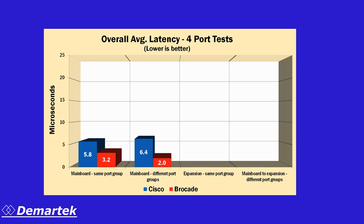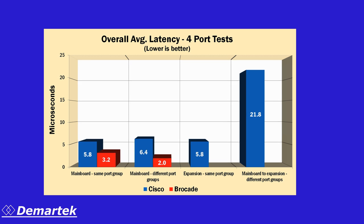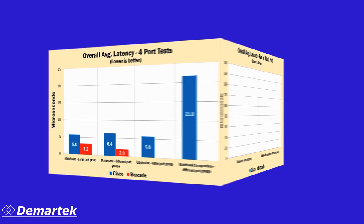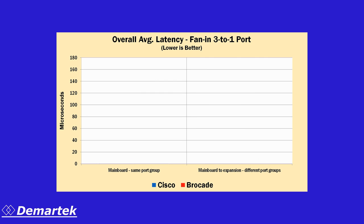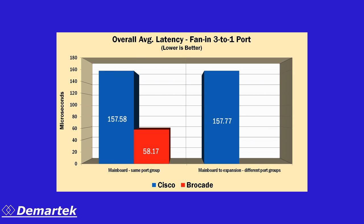Because the Cisco switch has a main board and an expansion board, we had to run extra tests for the Cisco switch. For the next set of tests, we ran half-duplex tests with three ports communicating to one port. This traffic pattern is typical of multiple servers communicating with one storage target, or one server communicating with multiple storage targets.